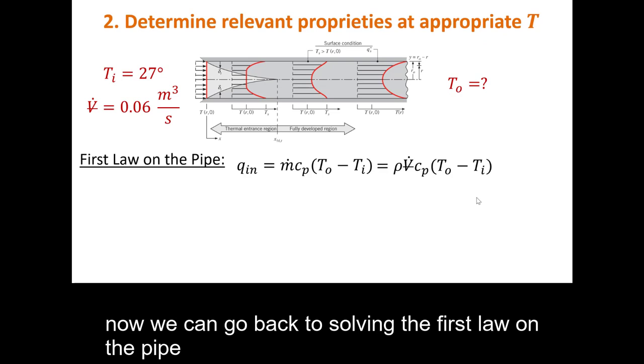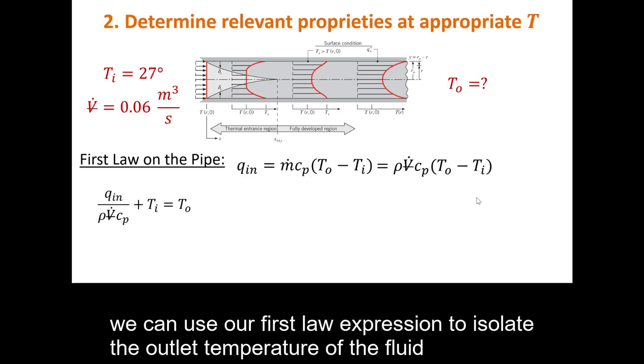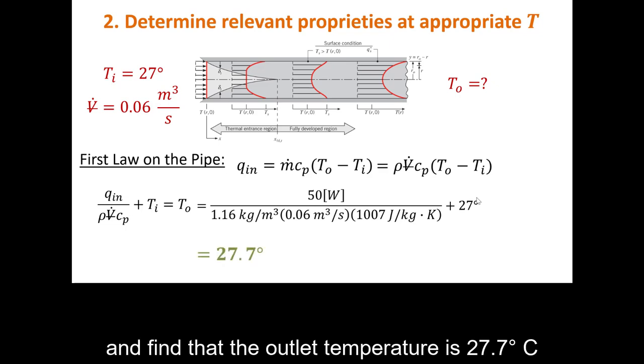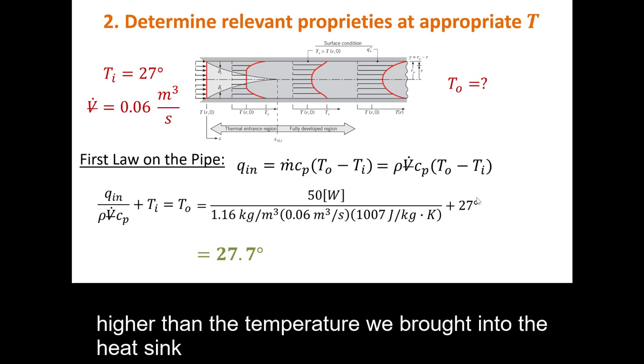Now, we can go back to solving the first law on the pipe. We can use our first law expression to isolate the outlet temperature of the fluid. Then, we can plug in the values that we know and find that the outlet temperature is 27.7 degrees Celsius. Just less than 1 degree Celsius higher than the temperature we brought into the heat sink.